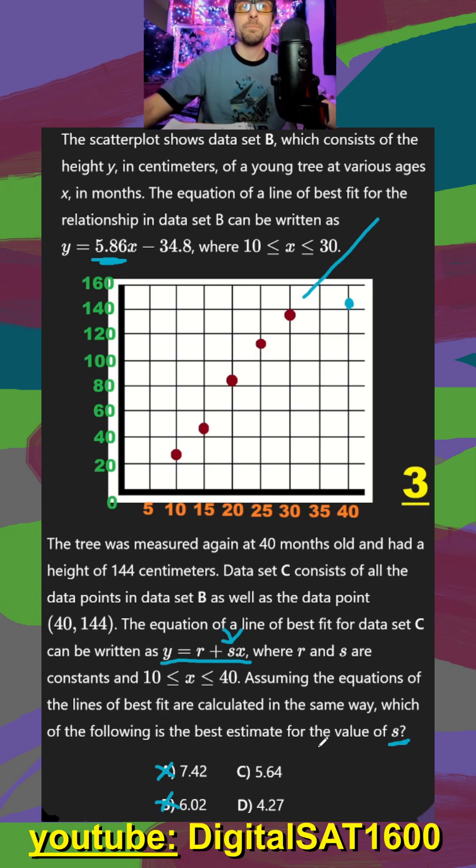But a 0.2 decrease is just not going to be enough to go all the way from this down to here. You're going to need a substantial decrease to reach this point. So it is automatically going to be D here.